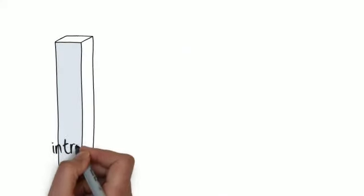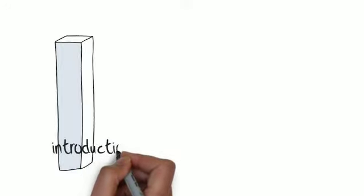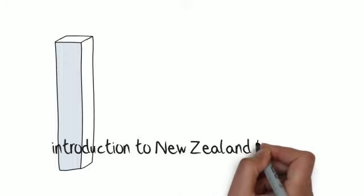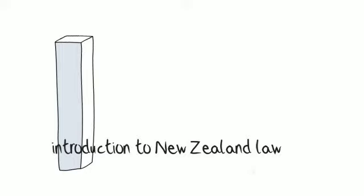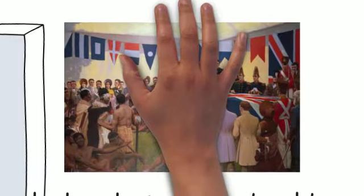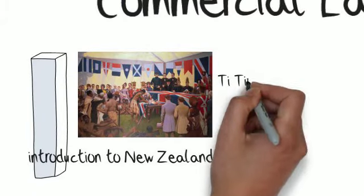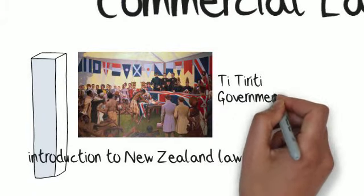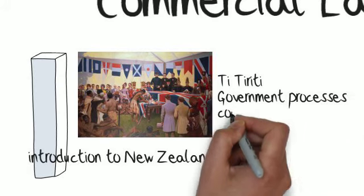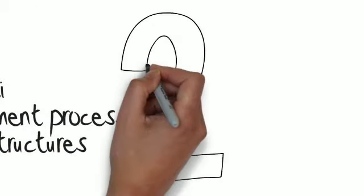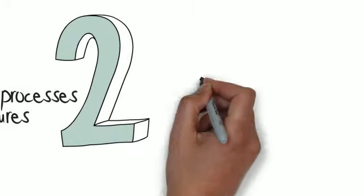The five key areas in our learning outcomes start with an introduction to New Zealand law. This is like a foundation or building blocks for understanding how law is made, administered, and ruled upon in New Zealand. We will look at issues such as the Treaty of Waitangi, how our government is set up, and the court structures that exist in New Zealand.